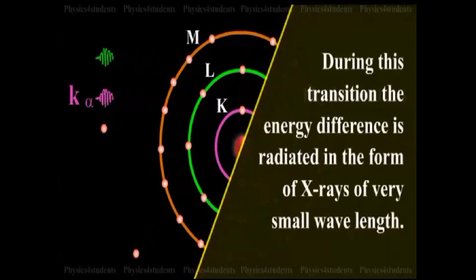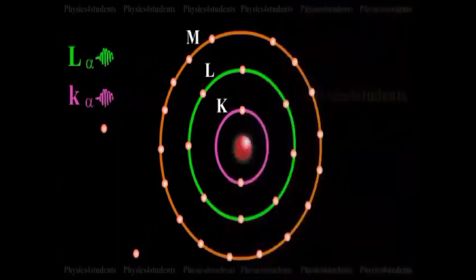During this transition, the energy difference is radiated in the form of X-rays of very small wavelength. This corresponds to the K-alpha line of the series.